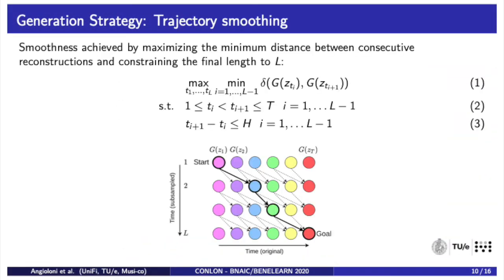Smoothness can be achieved by maximizing the minimum distance between consecutive reconstructions and constraining the final length to L, solving the following optimization problem, where delta is a distance function on patterns and H a look-ahead horizon, i.e. the maximum allowed number of positions that may be skipped.